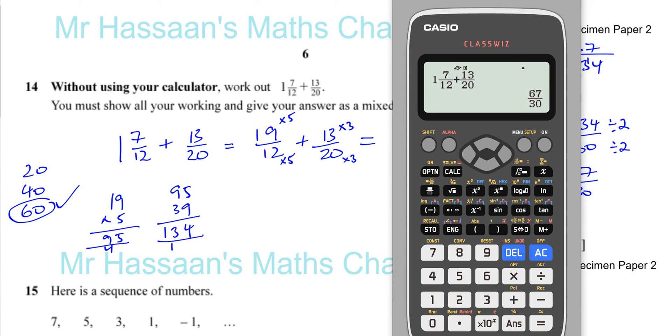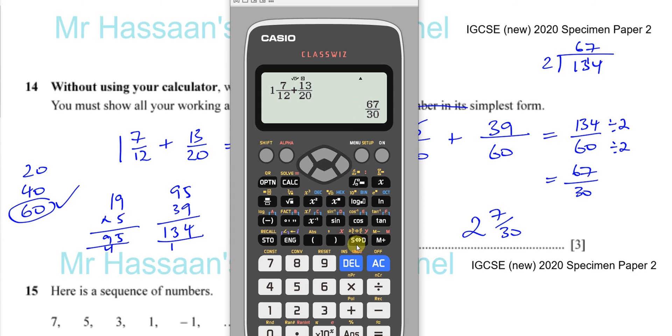If you want to know what that is as a mixed number, you press shift and that standard button, and it will change it into 2 and 7/30. You can just make sure that you've done it correctly.